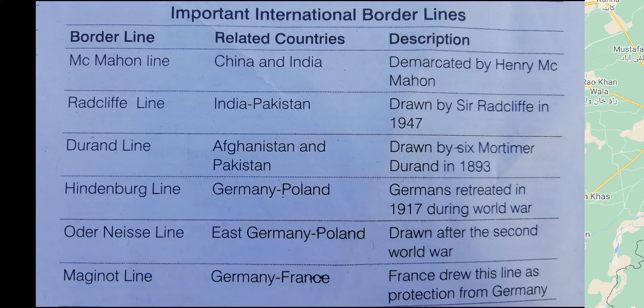The Radcliffe Line is between India and Pakistan, drawn by Sir Radcliffe in 1947. The Durand Line is between Afghanistan and Pakistan, drawn by Sir Mortimer Durand in 1893. The Hindenburg Line is between Germany and Poland; Germans retreated in 1917 during World War One.